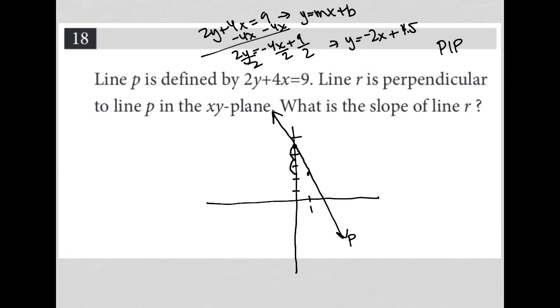The next sentence says line R is perpendicular to line P in the xy-plane. What is the slope of line R? Okay, so that tells me I've done way too much work here. But hey, out of habit, it's fine for me.